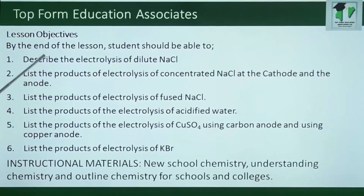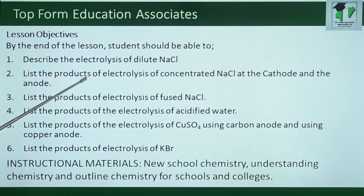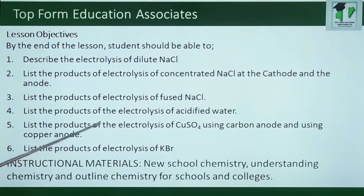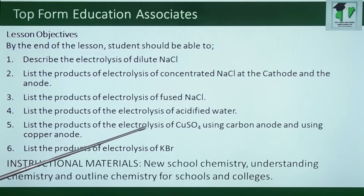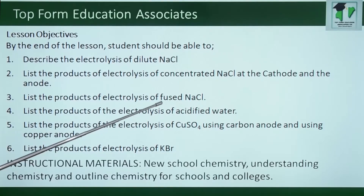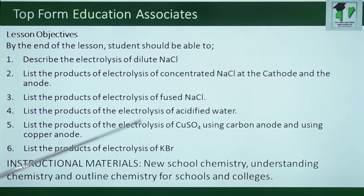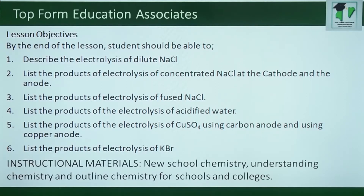At the end of this lesson, you should be able to describe the electrolysis of dilute sodium chloride, list the products of electrolysis of concentrated sodium chloride at the cathode and at the anode, list the products of electrolysis of fused sodium chloride, list the products of electrolysis of acidified water, list the products of electrolysis of copper sulfate using carbon anode and copper anode, and the products of electrolysis of potassium bromide.